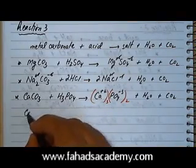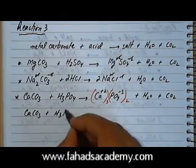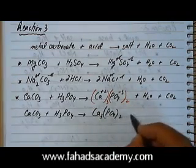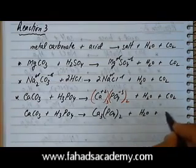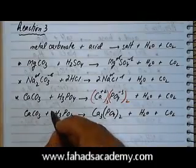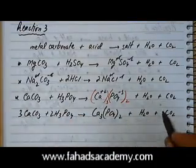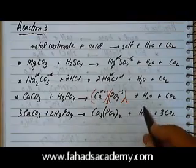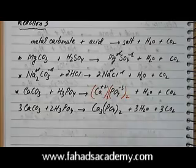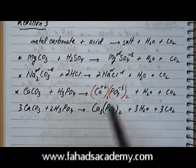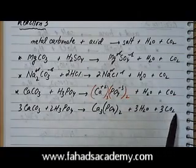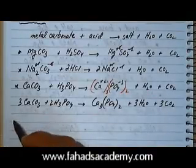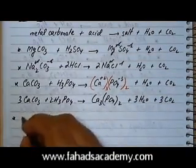Rewriting this equation: CaCO₃ plus H₃PO₄ gives Ca₃(PO₄)₂ plus H₂O and CO₂. To balance, there should be three CaCO₃ and two H₃PO₄, giving three CO₂ and three H₂O. Checking oxygens: eight on each side — balanced. This is a balanced equation. Another carbonate we could use is ammonium carbonate.